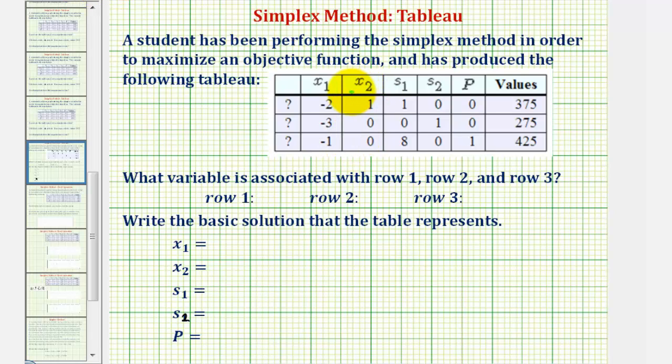So notice how x sub two is active or basic because this column only contains a one and zeros. And so does the column labeled s sub two and p. So these are the three active variables.